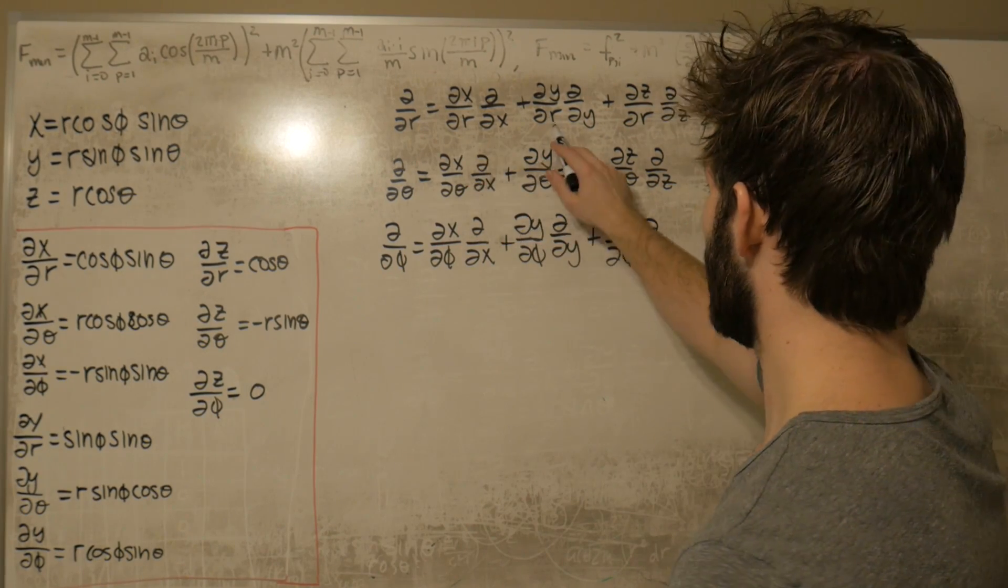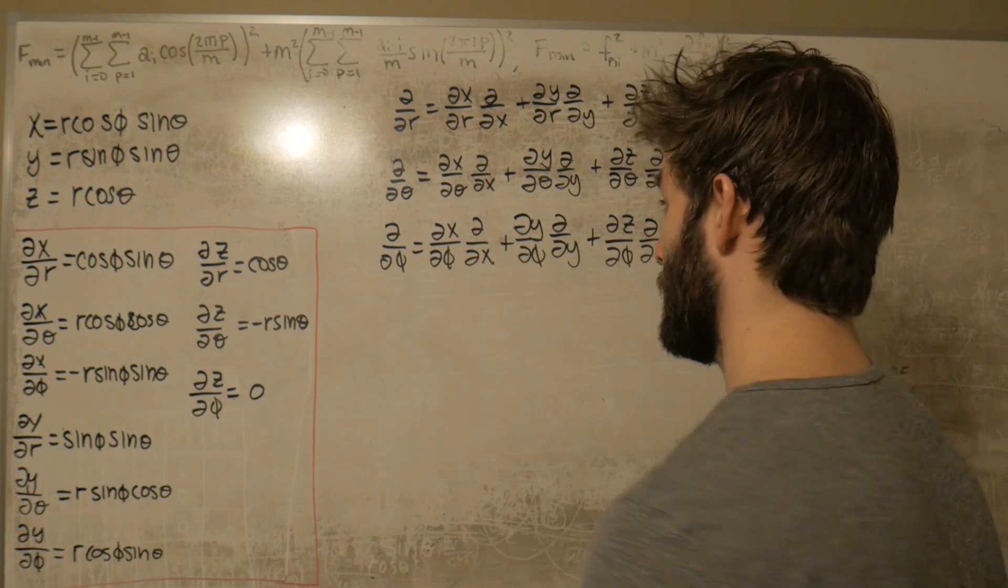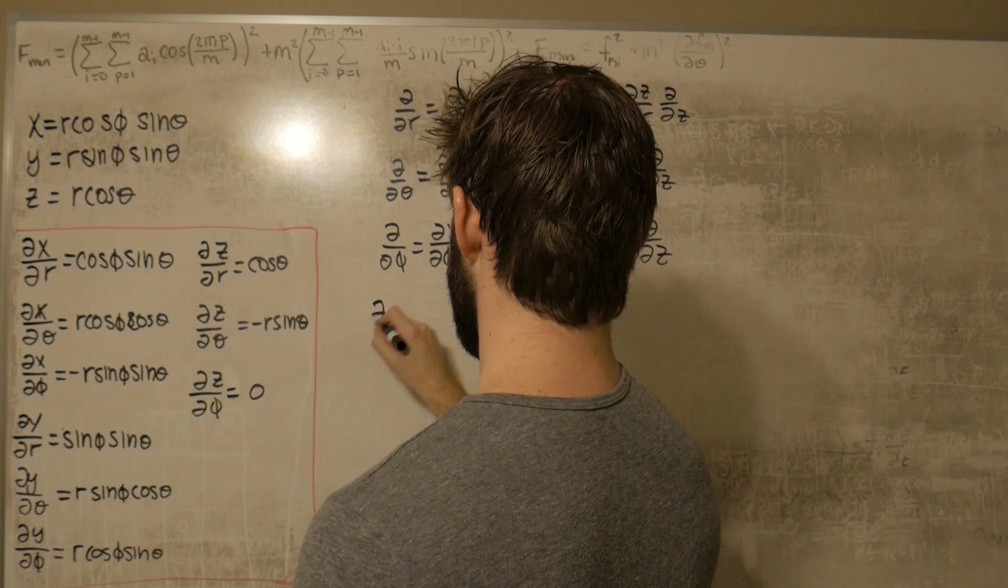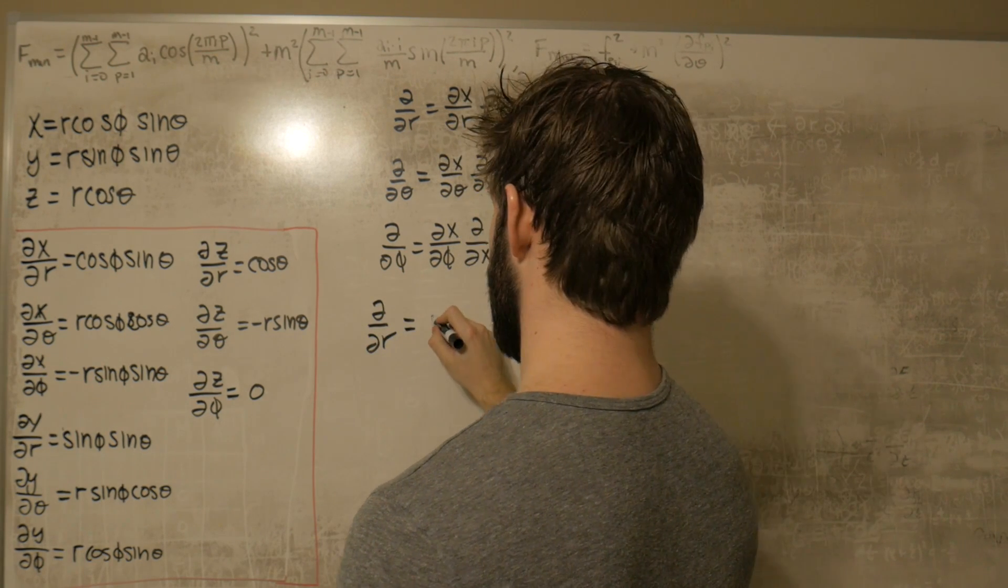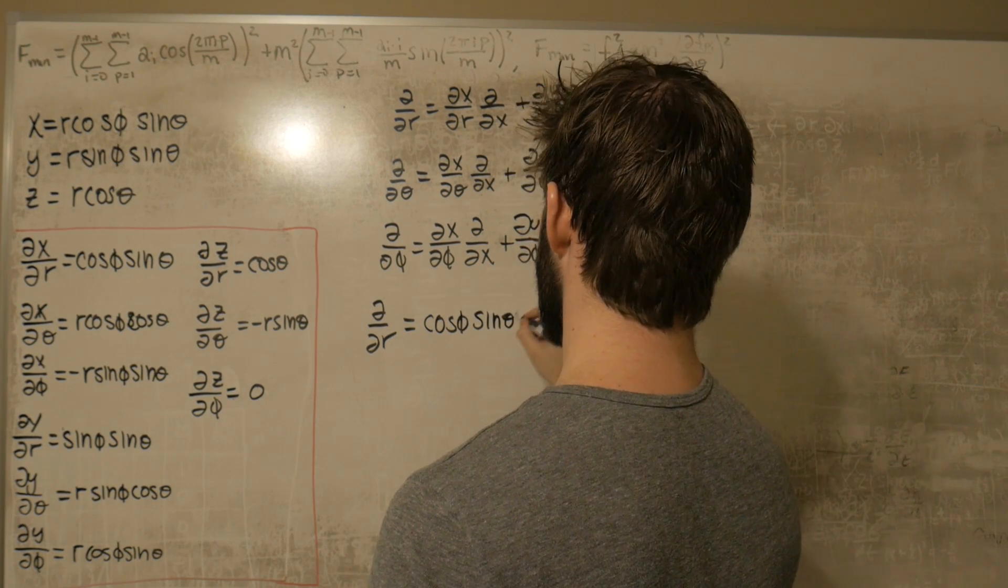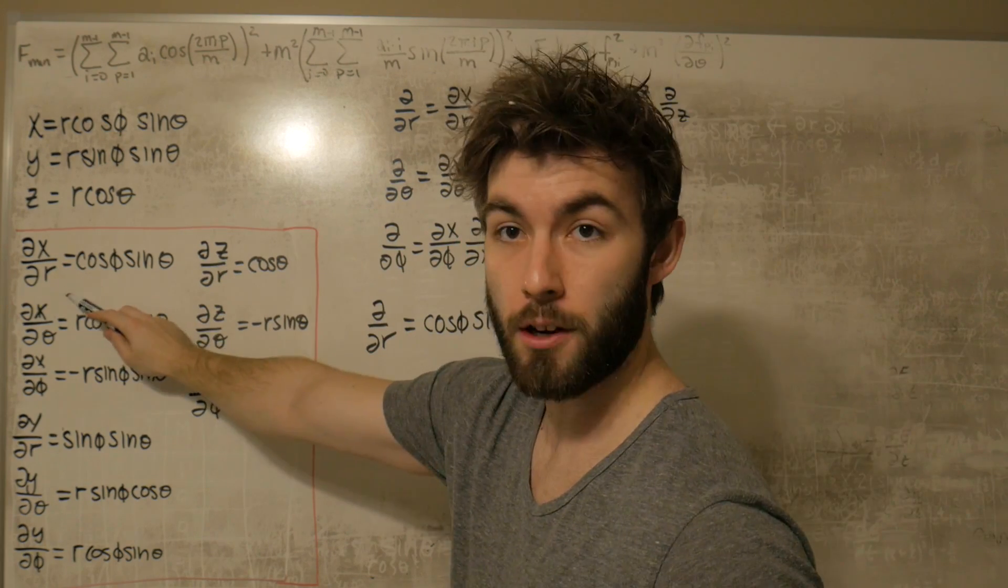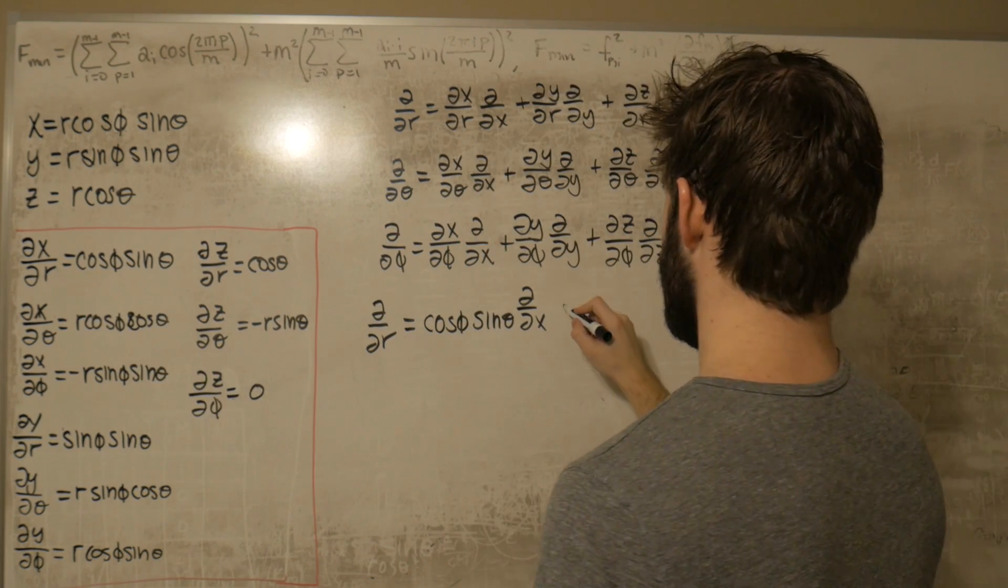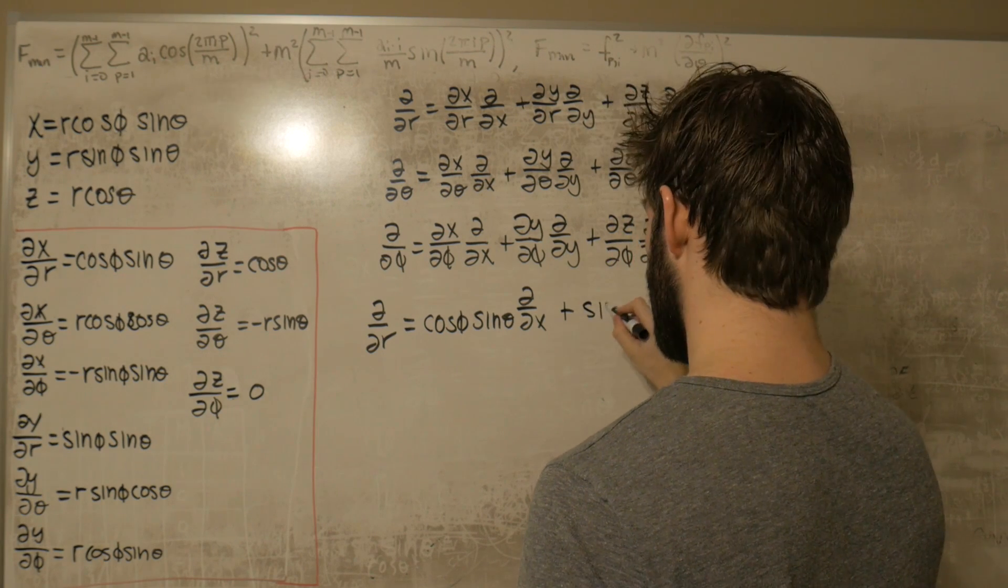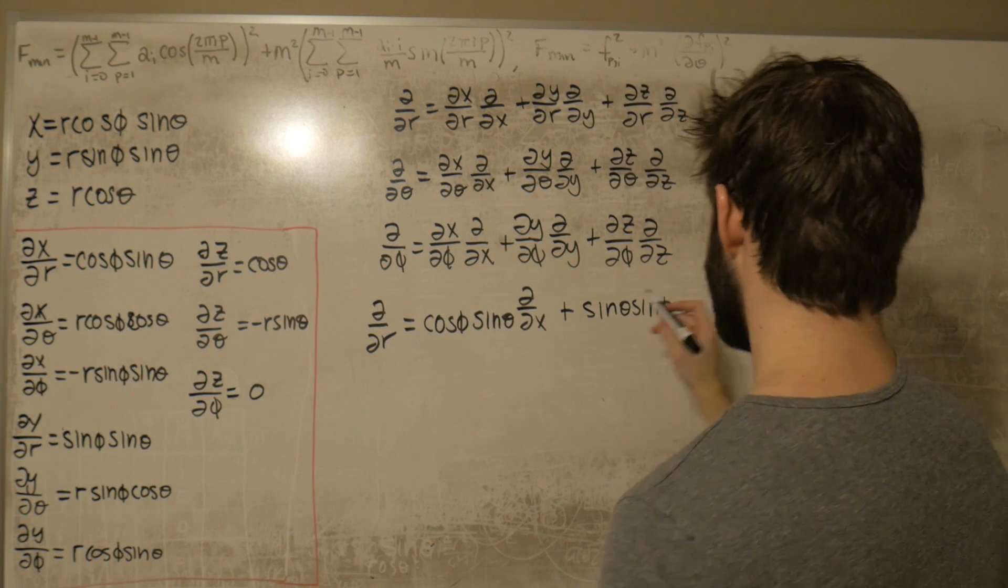Since we know what all these leading terms are, because we've already calculated them, we can just plug them in now and simplify. So this gives dx/dr is just this term here, plus dy/dr, which is going to be sine theta, and I'm probably just going to speed up the rest of this.